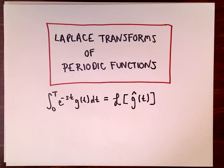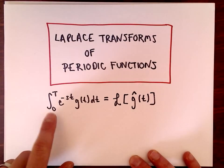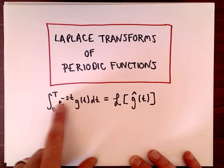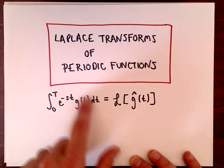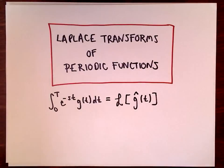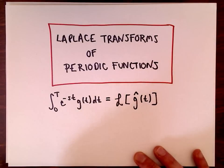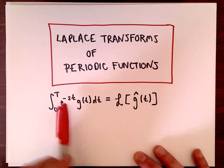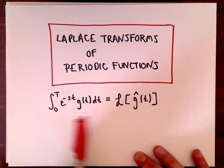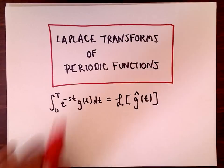In this example, we're going to look at some more Laplace transforms of periodic functions. To compute the Laplace transform of these periodic functions, we use a formula where the numerator is the integral from zero to capital T of e to the negative st times g of t dt, where g of t is a periodic function with period T. Computing this integral can often be tricky, so we introduce a new function called g-hat to help compute it.